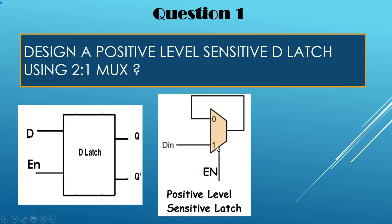To design the same latch using a 2-to-1 MUX, we give Enable to the select line. When Enable is 0, the output should be latched, so we feed the output back to input line 0 so it passes through. When Enable is 1, whatever is on input D is passed to Q.